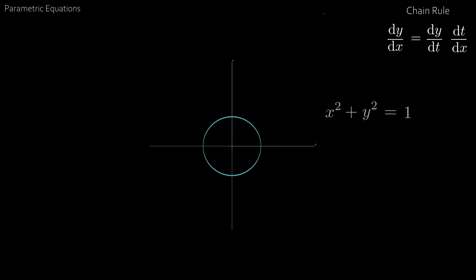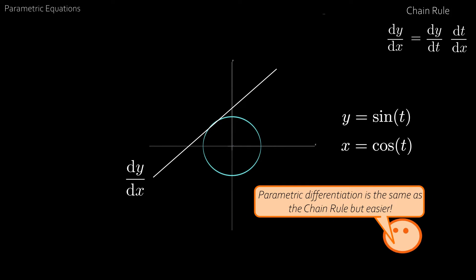Now imagine we have the cartesian equation for the circle and try to find dy by dx. We'd first rearrange giving us y equal to the square root of 1 minus x squared. Then if we make the substitution t equal to arc cosine x, or x equal to cosine t, as we would do if we were using the chain rule, we get y equal to the square root of 1 minus cos squared t, which equals the square root of sine squared t, which is just sine t. But look what we have here. We've ended up with our parametric equation.